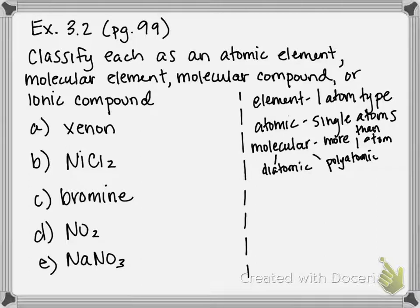Hopefully you can read that. So dia, D-I, di, means two. That means it's a group of two, the same type of elements grouped together. Whereas polyatomic elements are more than two atoms grouped together.